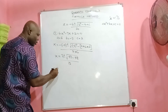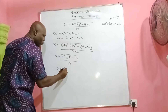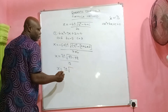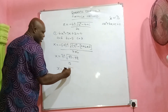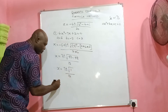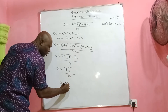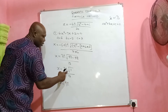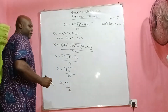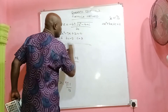So x = 7 ± √1, all over 12. The square root of 1 is 1, so we have x = (7 ± 1) / 12.